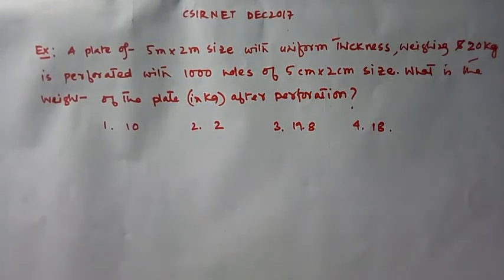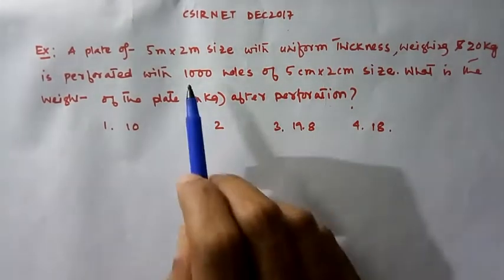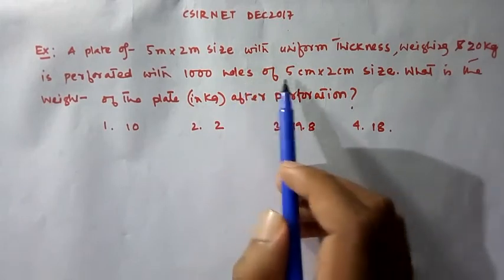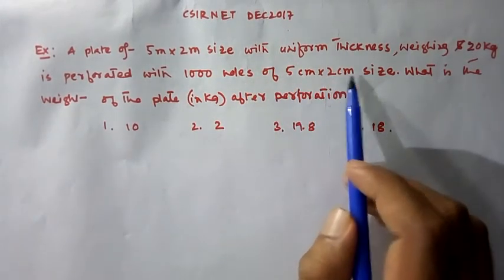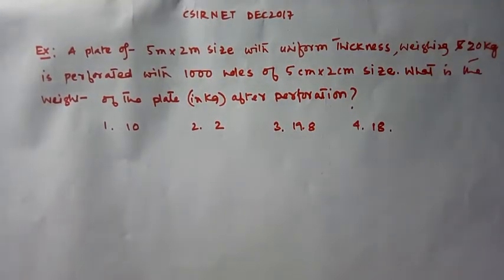This question appears in session December 2017. In the question, there is a plate of size 5m x 2m with uniform thickness weighing 20 kg in which 1000 holes are made of size 5cm x 2cm. What is the weight of the plate after perforation? That is, after making the holes.